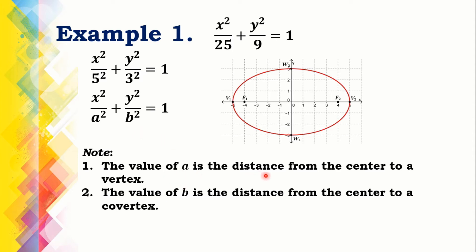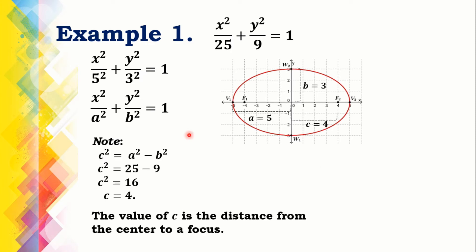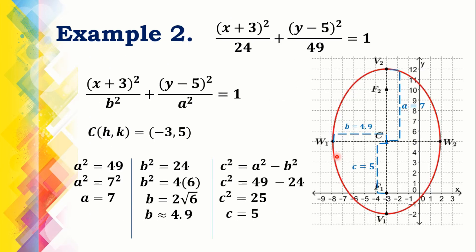The value of A is the distance from the center to a vertex, and the value of B is the distance from the center to a co-vertex. We already have A equals 5 and B equals 3. The distance from the center to a vertex is 5 units and the distance from the center to a co-vertex is 3 units. Using the equation C squared equals A squared minus B squared, C squared equals 16 and C equals 4, so the distance from the center to a focus is 4 units.